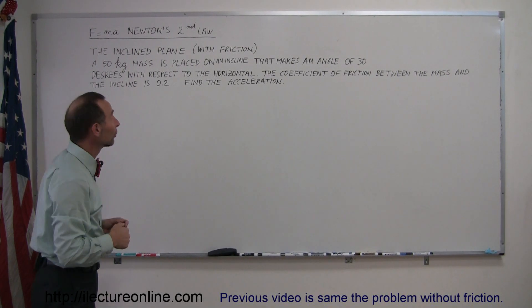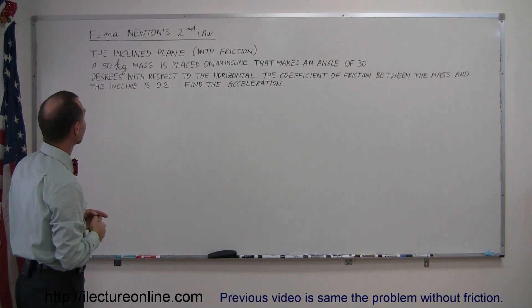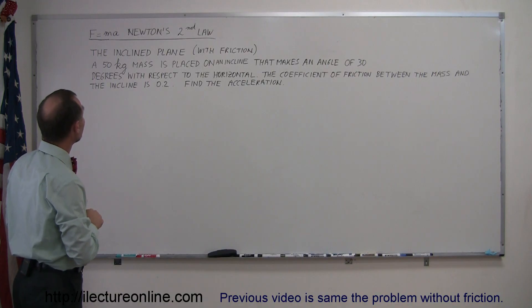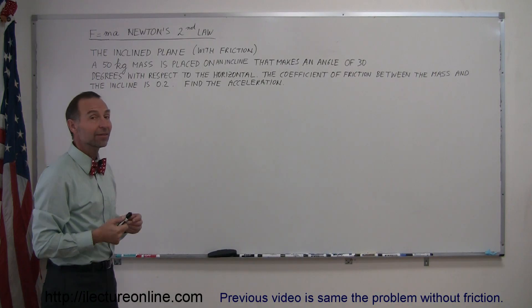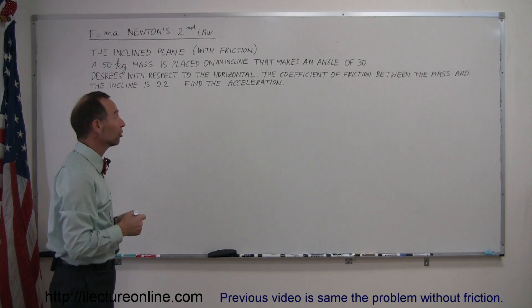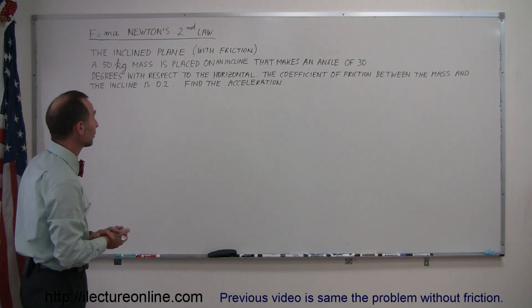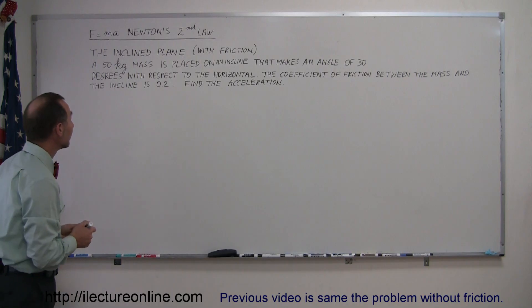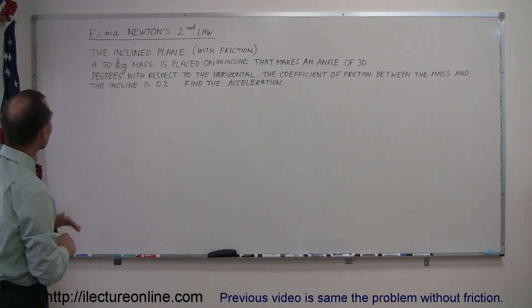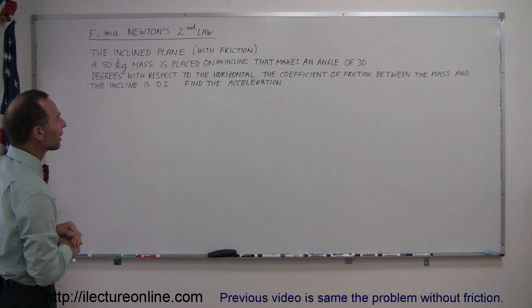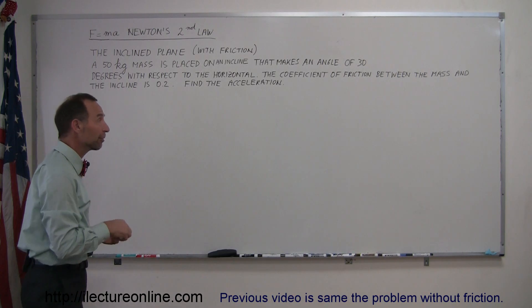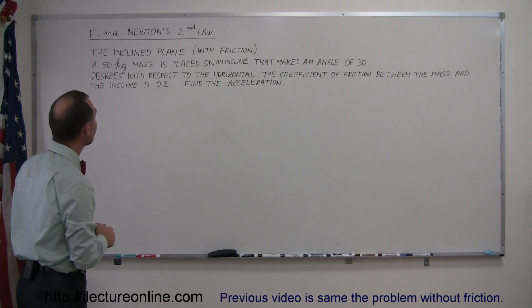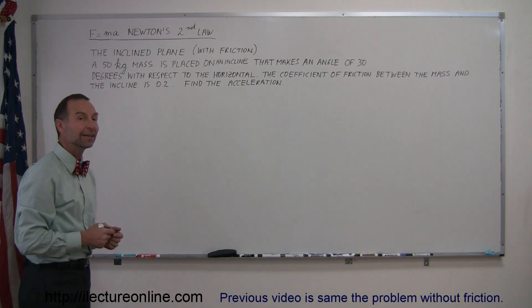Welcome to iLectures. This time we're going to do a problem involving Newton's second law with an inclined plane, and this time the inclined plane has friction. There's friction between the object and the inclined plane. So let's go ahead and read the problem and solve it. It says here that a 50 kilogram mass is placed on an incline that makes an angle of 30 degrees with respect to the horizontal. The coefficient of friction between the mass and the incline is 0.2. Find the acceleration.